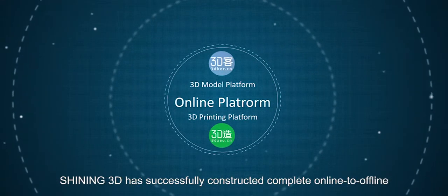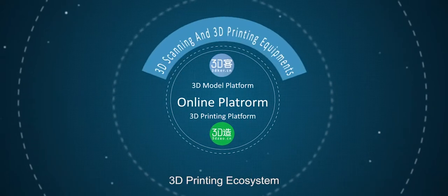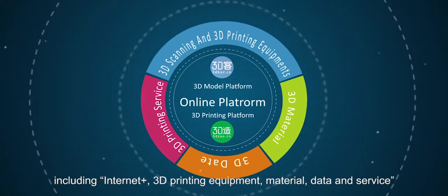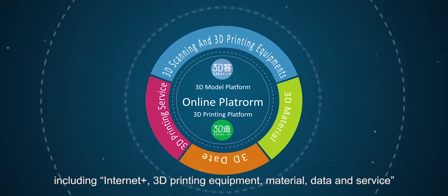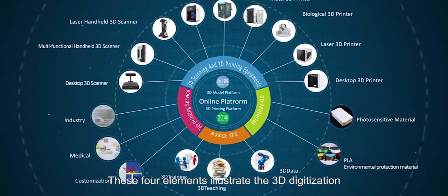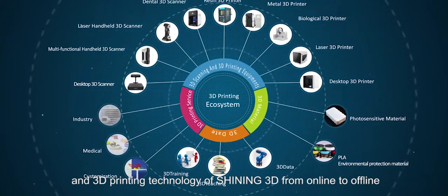Shining3D has successfully constructed complete online to offline 3D printing ecosystem, including Internet Plus, 3D printing equipment, material, data and service. These four elements illustrate the 3D digitization and 3D printing technology of Shining3D from online to offline.